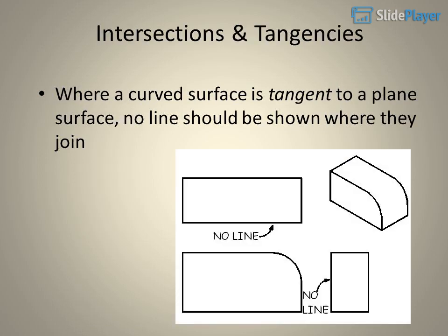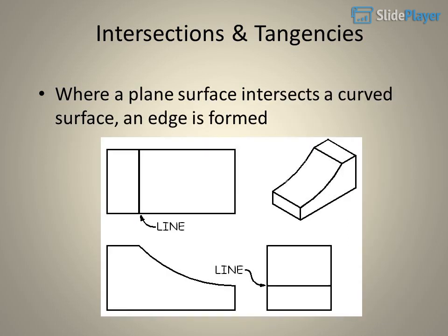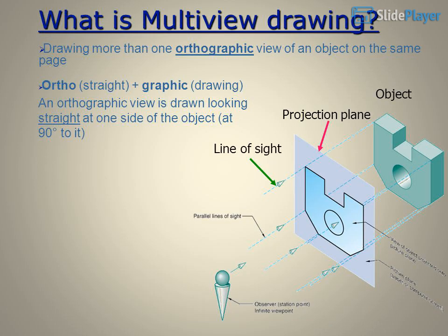Regarding intersections and tangencies: where a curved surface is tangent to a plane surface, no line should be shown where they join. Where a plane surface intersects a curved surface, an edge is formed.